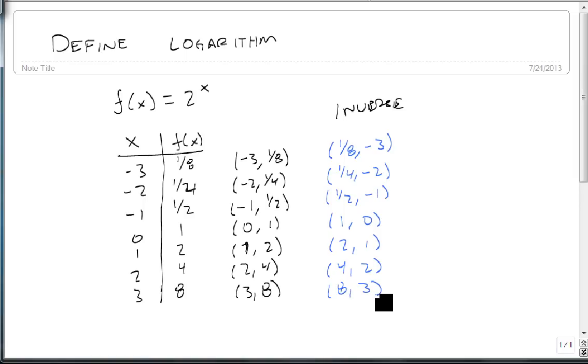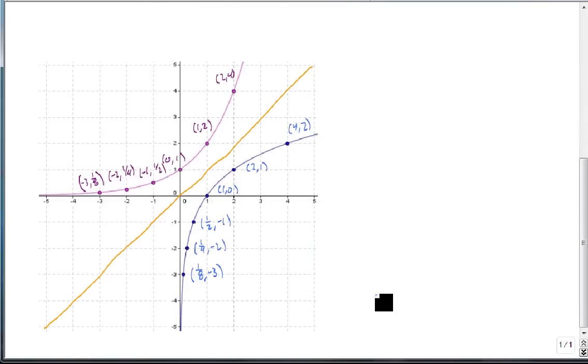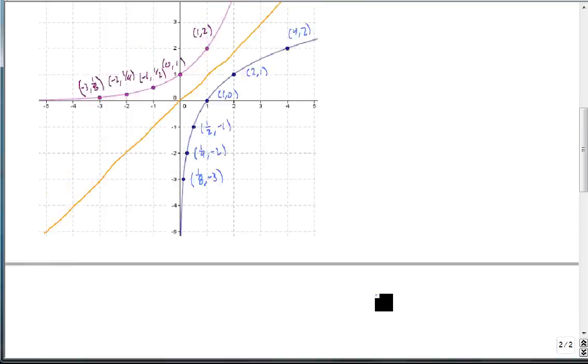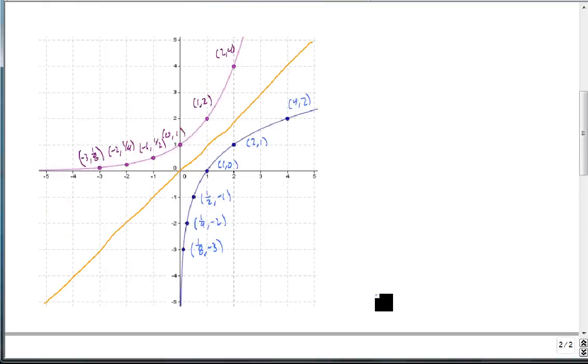And so this gives us our input and output pairs for the inverse of f of x equals 2 to the x. So here's a graph with those points on it. Notice here's our exponential points and here's its inverse points.